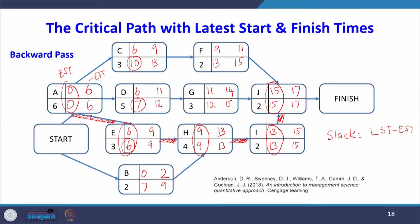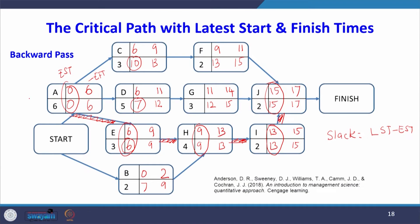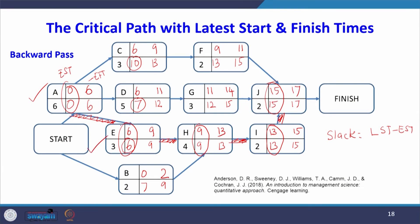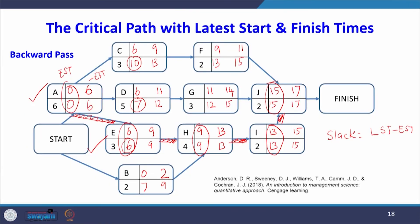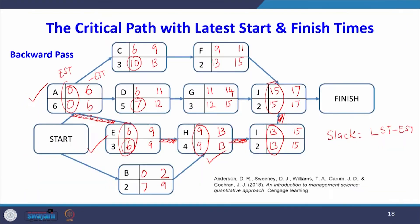These critical activities cannot be delayed at all. If we delay any critical activity, the project duration will be extended beyond 17 weeks. The critical activities are A, E, H, I, and J. Apart from this critical path, the non-critical activities have a schedule with earliest and latest starting and finishing times.